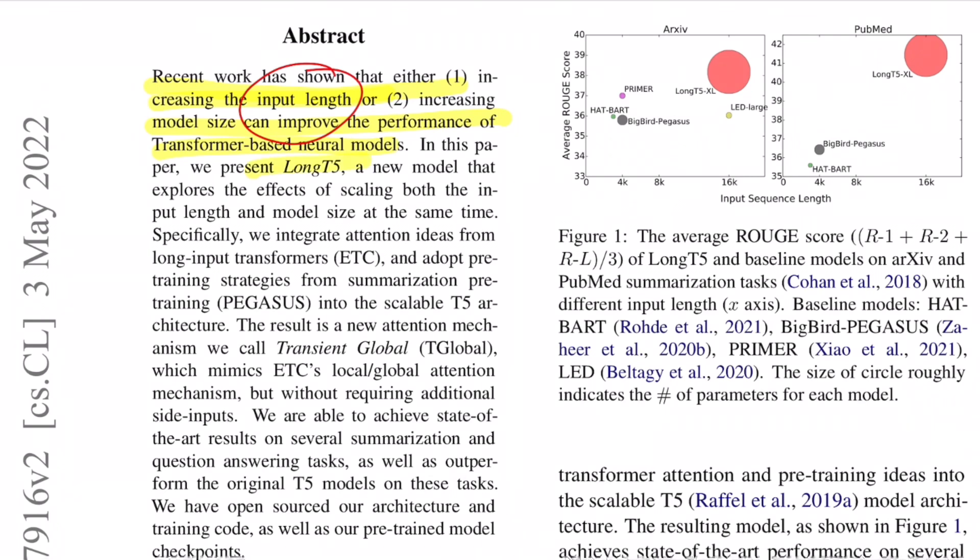So in this paper, we proposed Long T5, a model that explores the effects of scaling both input length and model sizes at the same time. They pick some ideas from the paper Long Input Transformers around how to model attention and also adopt the pre-training strategy from the paper Pegasus. And they've also performed ablation studies to show that masking entire sentence and then reproducing it on the output end, which is what Pegasus does, is better than what a typical T5 would do, which is masking a phrase and then outputting it on the decoder end. They also named their new attention mechanism as transient global attention. And they were able to achieve state-of-the-art results on several summarization question answering tasks and also outperformed the original T5 model on these tasks.